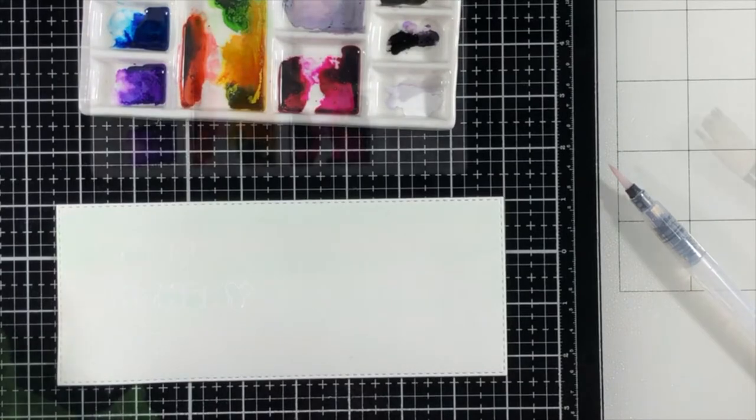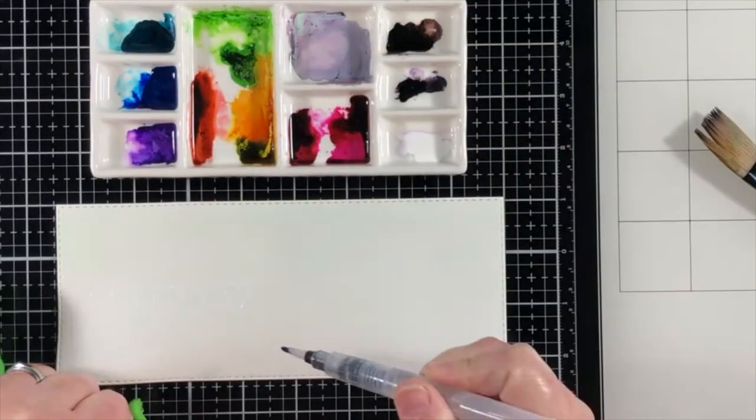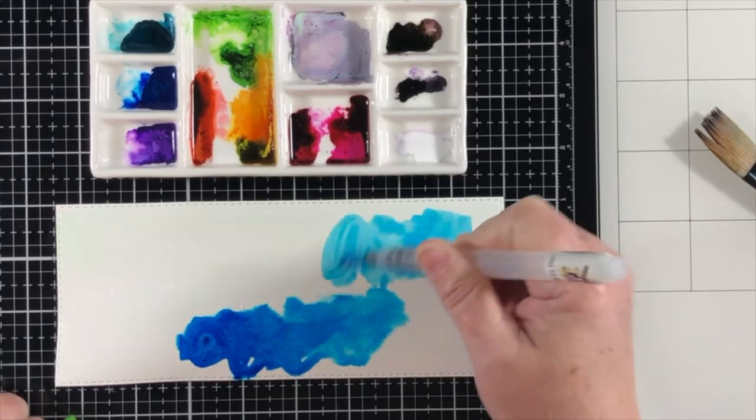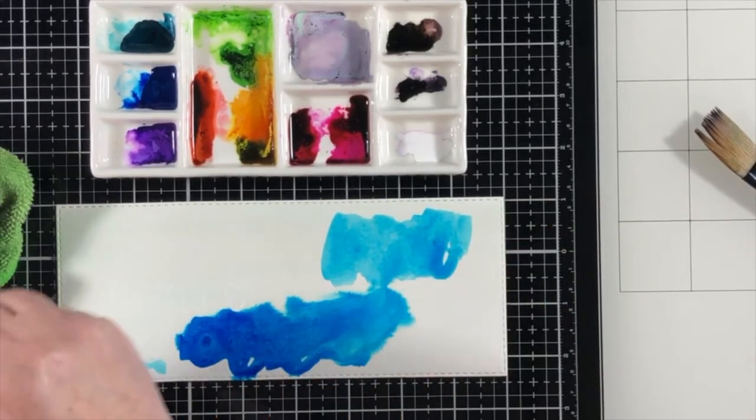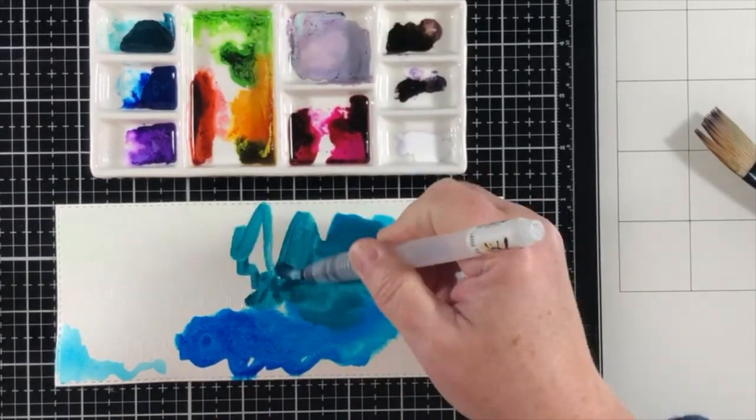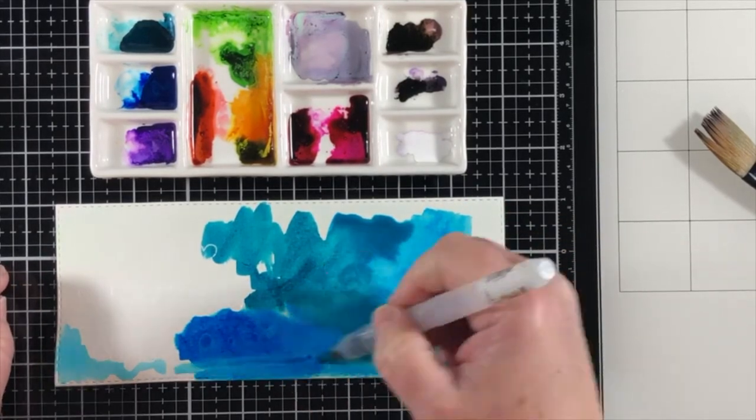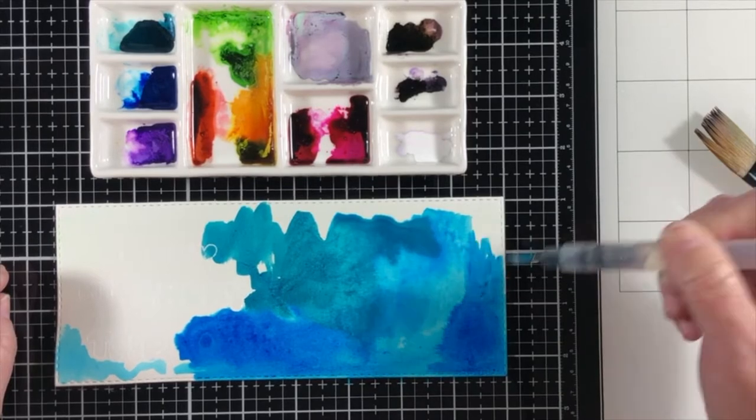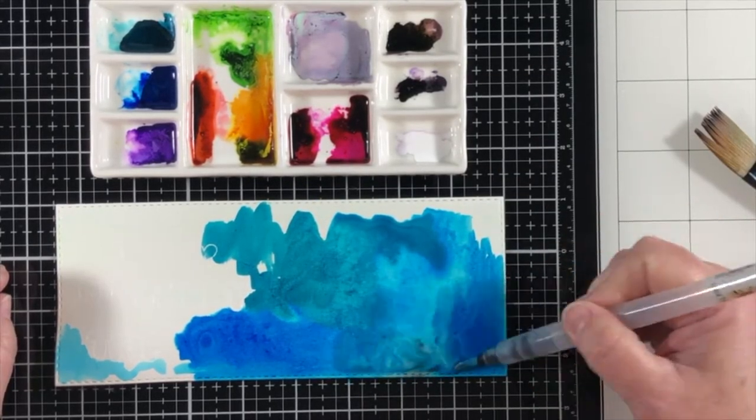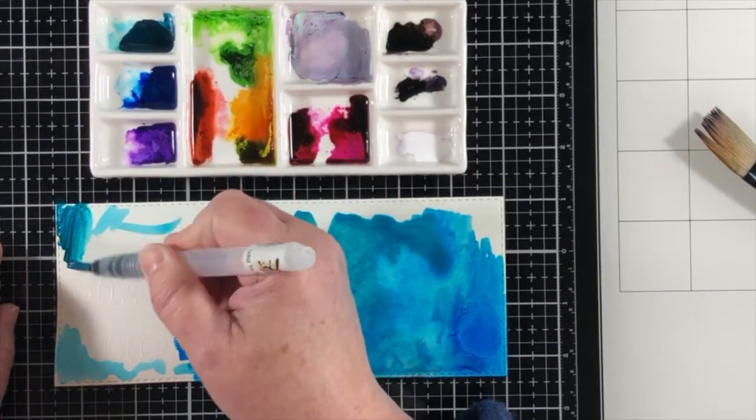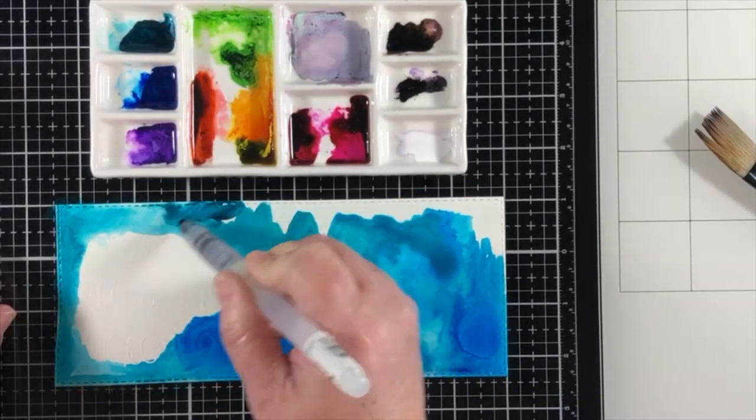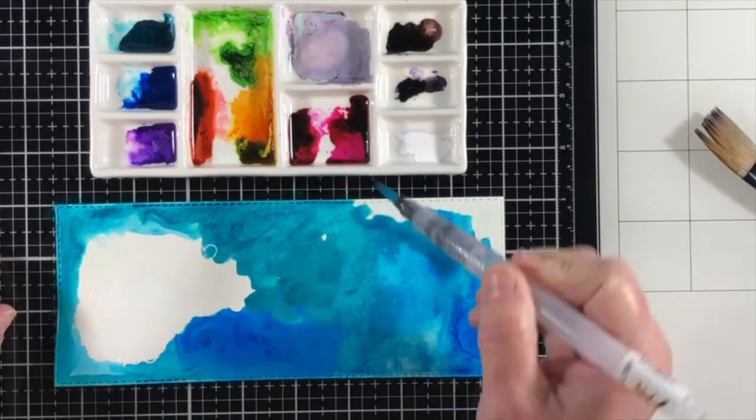So now we're at the point to where we're going to do the emboss resist technique with some watercoloring. I left the entire watercolor process in the video, which makes it a little bit longer. But I thought you would really enjoy seeing exactly how the background's created. So the first thing I did was wet the panel. And I'm staying away from the embossed letters until I get some color on all the rest of the paper.